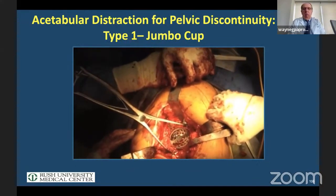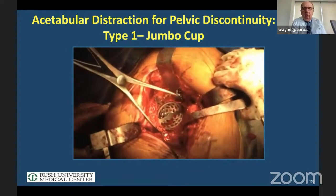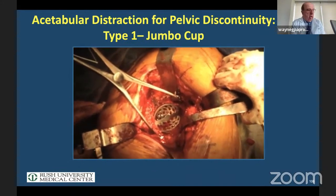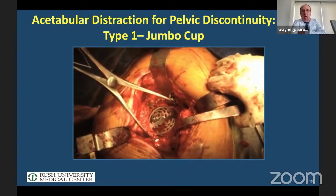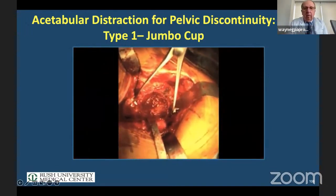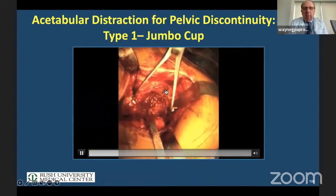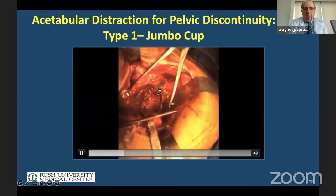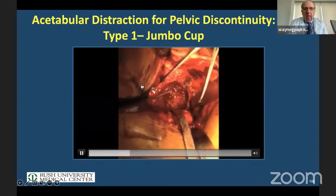For type one, we use a jumbo cup. We have a distraction device on, and as we separate out you can see motion here — that's the discontinuity going right down through into the acetabulum. The distraction device is placed on the ischium and the ileum, so we pull this apart.